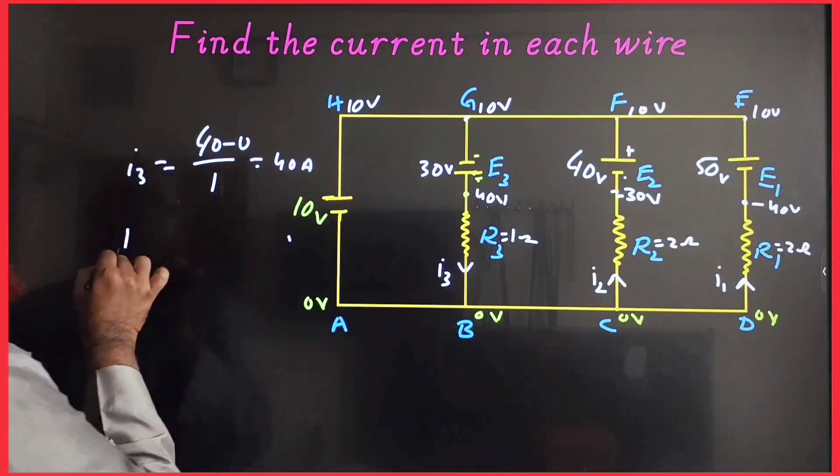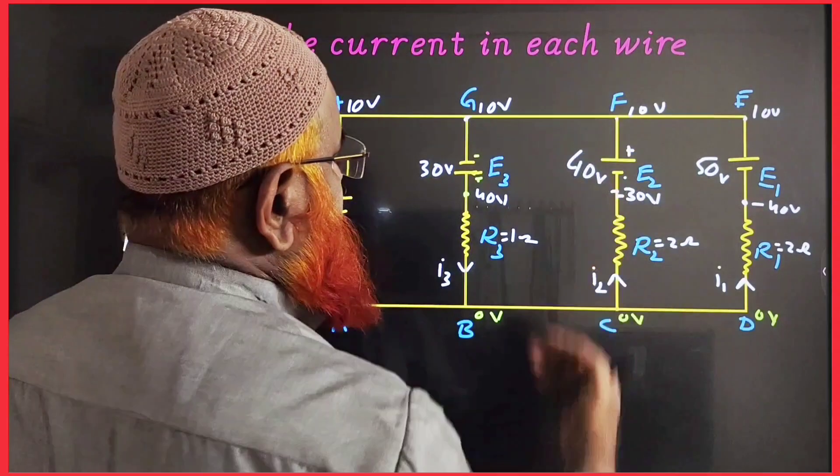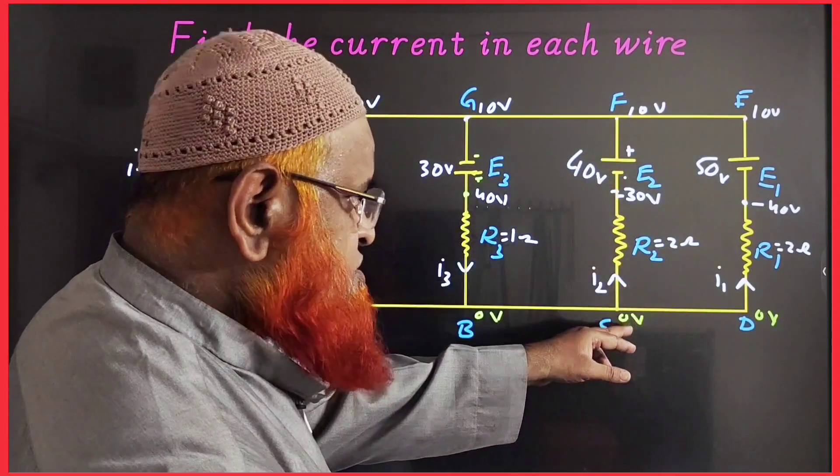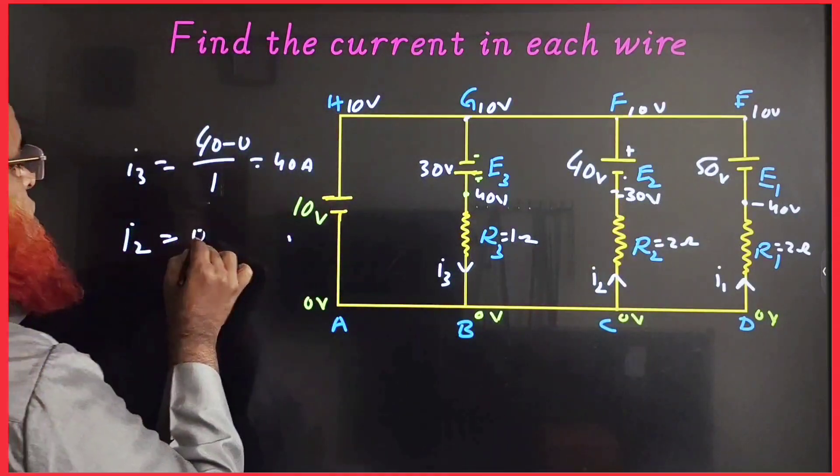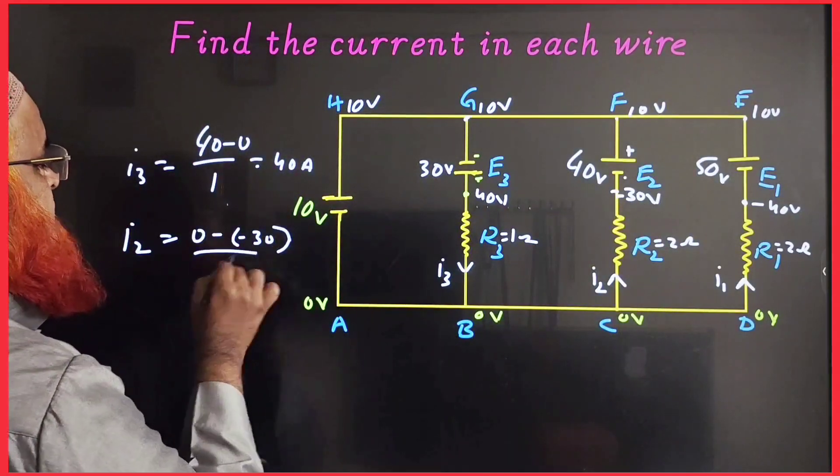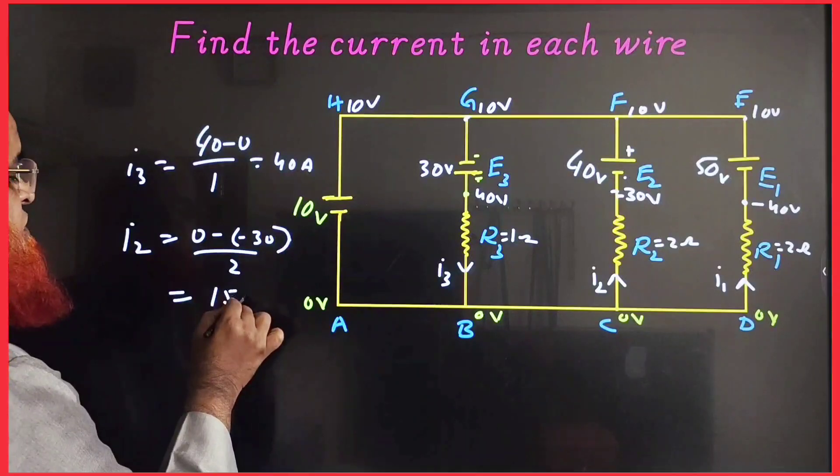Now you have to find out the current I2. I2 is flowing in this direction. Starting from 0 volts minus minus 30, that is 0 minus of minus 30 divided by 2. Therefore, it's going to be 50 amperes.